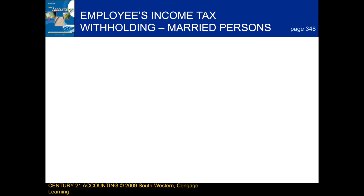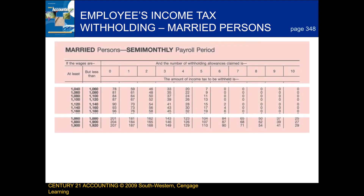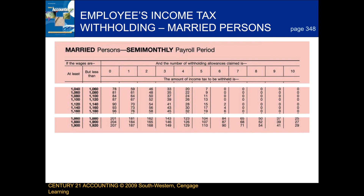Okay, so the last thing that we're going to be talking about in this lesson is an employee's income tax withholding table for married persons. And when we analyze an employee's income tax withholding table for married persons, there are a few steps that we follow when doing this process. First, we select the appropriate table.